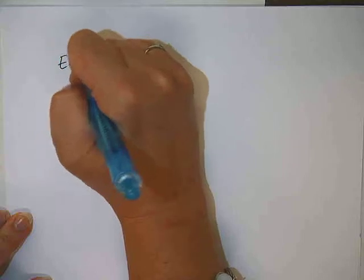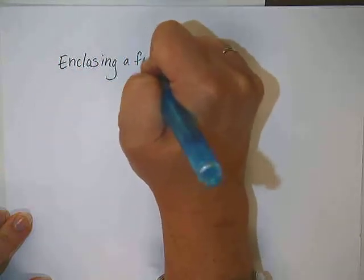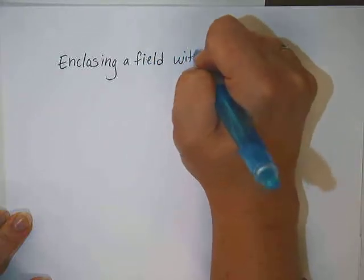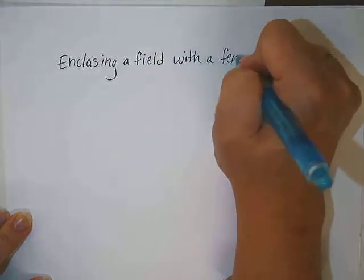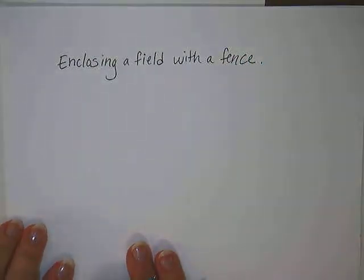We're now going to do a problem that involves another quadratic model, enclosing a field with a fence. Suppose you have a certain amount of fencing, and you want to create a rectangular field.